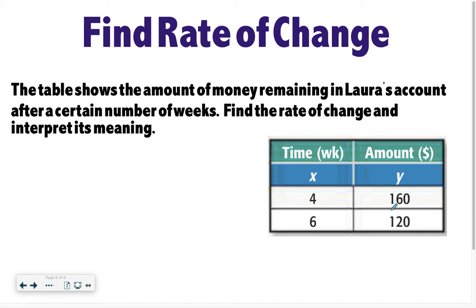The table shows the amount of money remaining in Laura's account after a certain number of weeks. Find the rate of change and interpret its meaning. So let's look at this one quickly, and then you are going to try to solve it on your own. So after four weeks have gone by, Laura has $160. After six weeks have gone by, Laura has $120. So notice her dollar amount got smaller. That means that the rate of change is going to be positive, negative, or zero. It should be negative. So why don't you go ahead and find the rate of change and type that in. Once you have done that, I want you to just think about what would its meaning be, but you don't have to type the meaning in as part of your answer. Good luck.